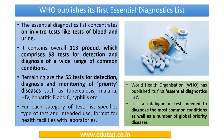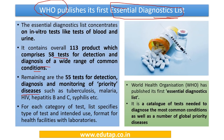WHO has published its first Essential Diagnostics List, which concentrates on different tests needed to diagnose medical conditions. It contains 113 products overall: 58 tests for detection and diagnosis of a wide range of common conditions, and 55 tests for priority diseases such as TB, HIV, hepatitis B, hepatitis C, and syphilis. For each test, the list specifies the type, intended use, and format for health facilities.